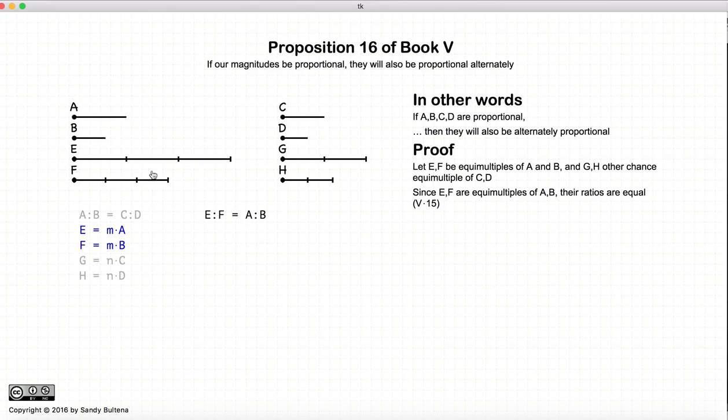Now we have that E to F is equal to A to B because E and F are equal multiples of A and B. That comes from proposition 15. So again, since E and F are equal multiples of A and B, E to F is equal to A to B.